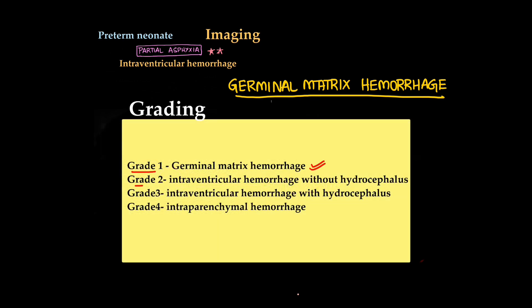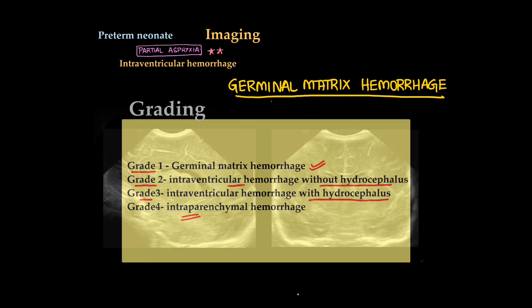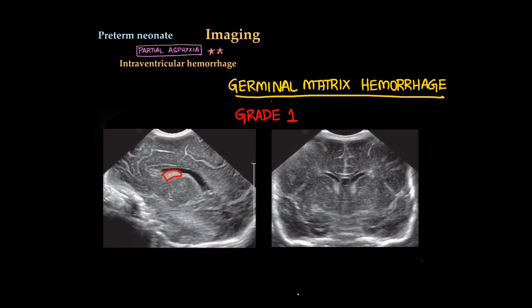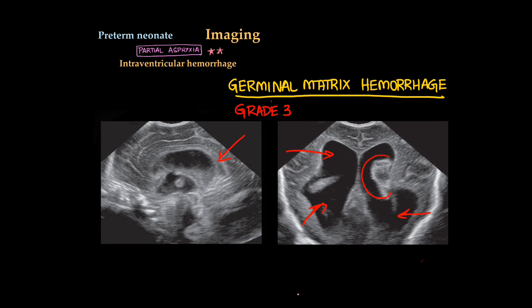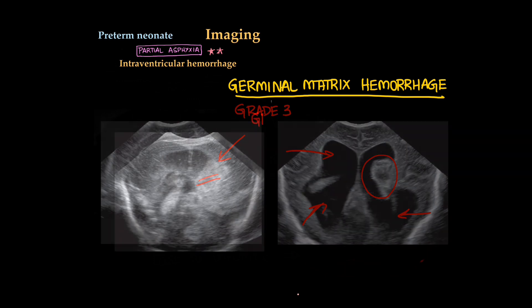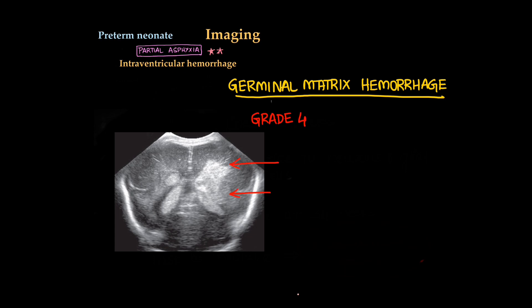Grading of intraventricular hemorrhage: Grade 1, only germinal matrix hemorrhage. Grade 2, intraventricular hemorrhage without hydrocephalus. Grade 3, with hydrocephalus. Grade 4, parenchymal extension of hemorrhage, intraparenchymal hemorrhage is also present. We will see one by one with images. This is grade 1, sagittal and coronal sections. Here you can see hemorrhage only in the caudothalamic grooves, germinal matrix hemorrhage. Grade 2, intraventricular hemorrhage without hydrocephalus. Grade 3 shows hydrocephalus, blood clot can be seen, hemorrhage present. Grade 4, intraparenchymal hemorrhage.